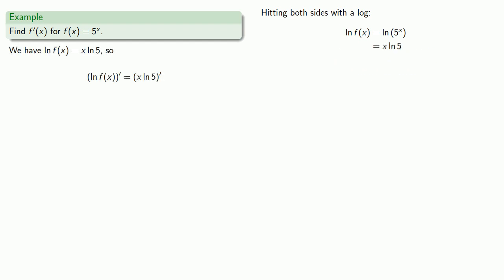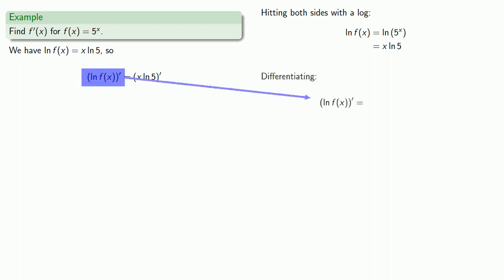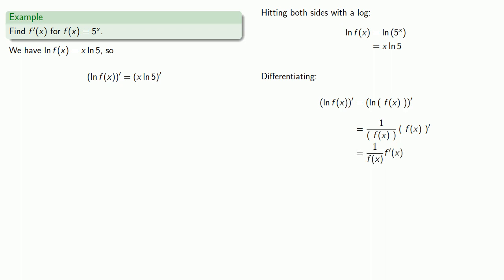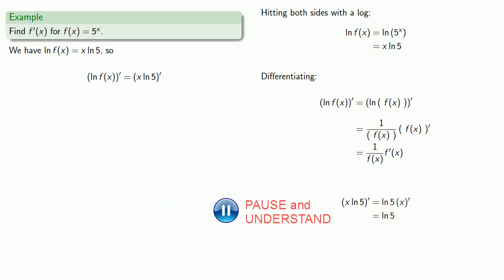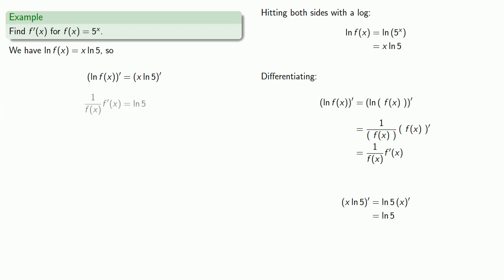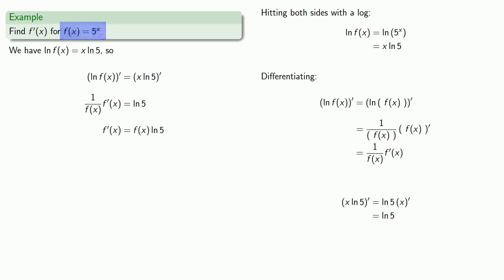Now we'll differentiate both sides. On the left, we have the derivative of log something, and the derivative of log something will be 1 over something times the derivative of something. On the right-hand side, we have x log 5. Log 5 is just a constant multiplier, so we can remove that to the front of the differentiation. We want to find the derivative of f of x. Since the original function was given to us in terms of x only, we'll replace f of x with what it's equal to.